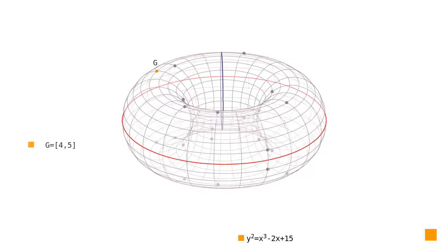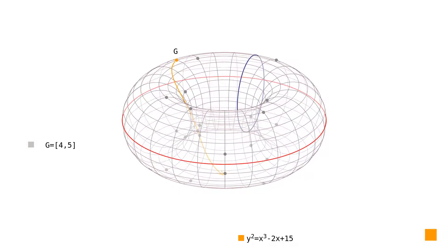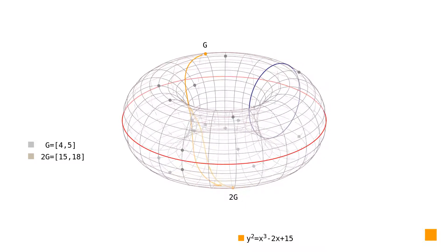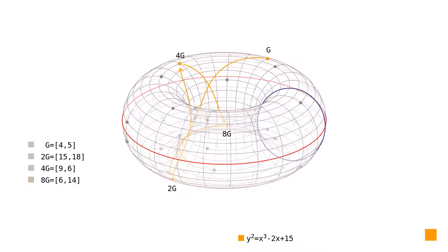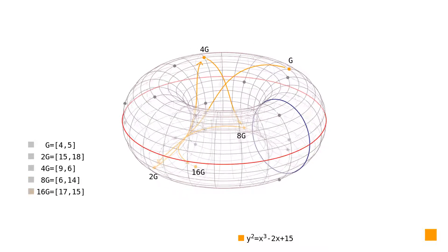After choosing the generator point, we iteratively double it and get the points double G, 4G, 8G, and finally 16G just to show them all.